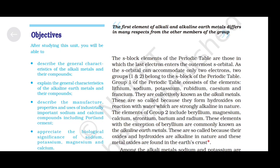The elements of group 2 include beryllium, magnesium, calcium, strontium, barium and radium — mnemonic: beta mage, car scooter, baap rasi. These elements, with the exception of beryllium, are commonly known as the alkaline earth metals. They are so called because their oxides and hydroxides are alkaline in nature and these metal oxides are found in the earth's crust.